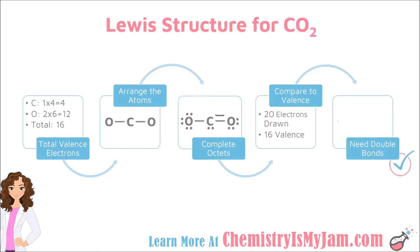This time I'll put the double bond on the other side. In order to draw a double bond there, I'm going to remove two electrons from both sides of the double bond. So another pair of electrons has to leave this carbon and a pair of electrons needs to leave that oxygen. Every time you create a double bond, it removes a pair of electrons from each side. A double bond represents two shared pairs of electrons. Now my structure has 16 valence electrons. The correct Lewis structure for carbon dioxide should have two double bonds.